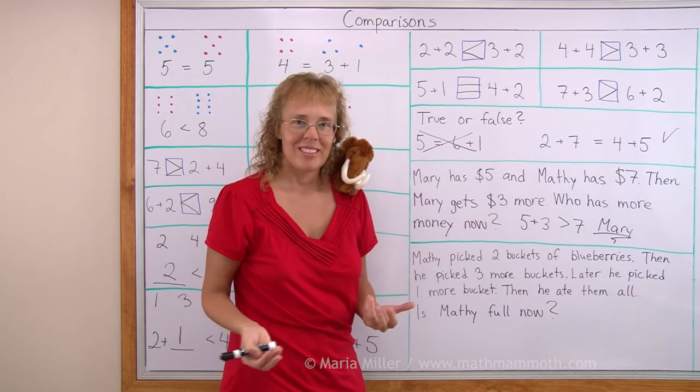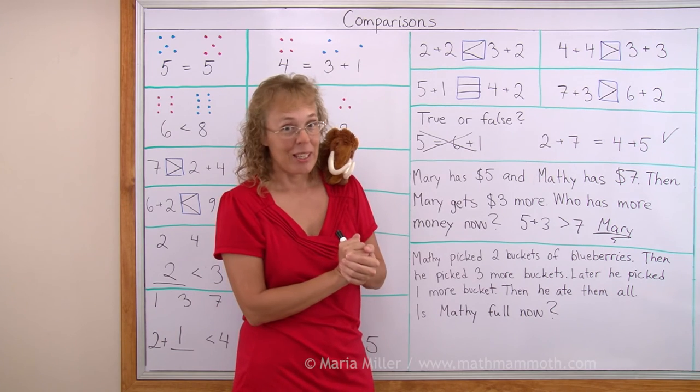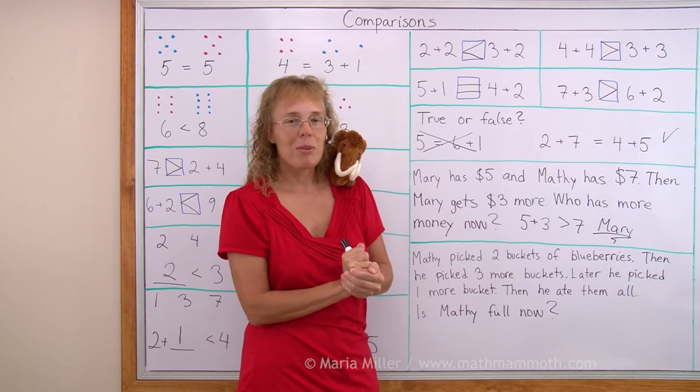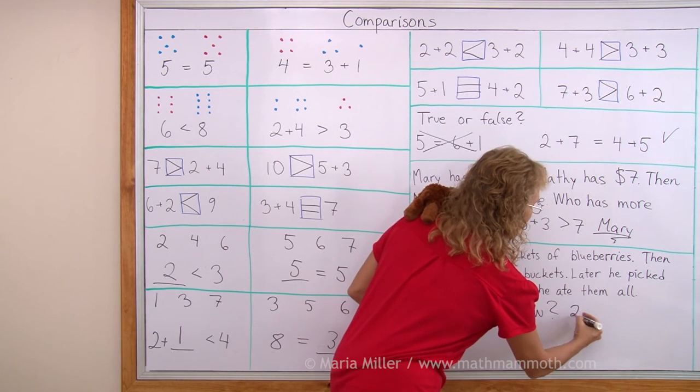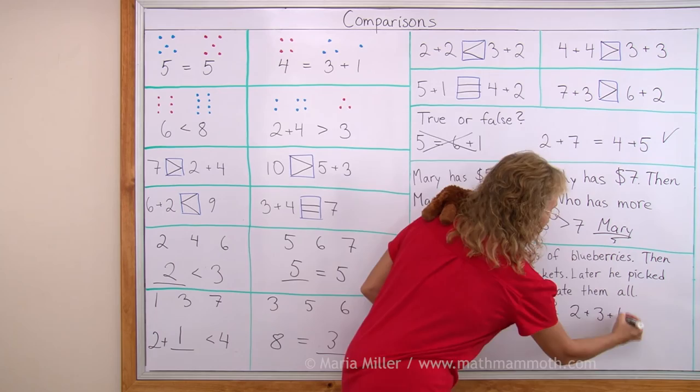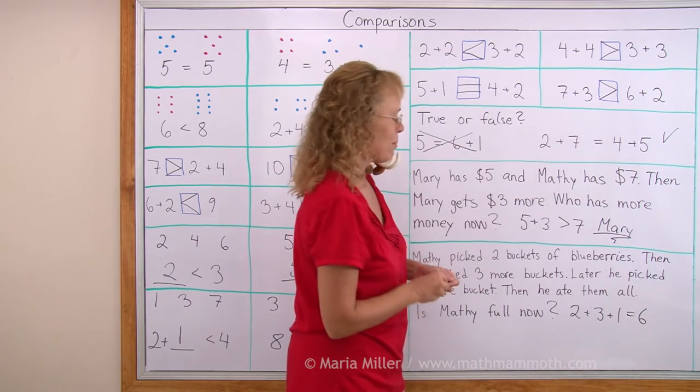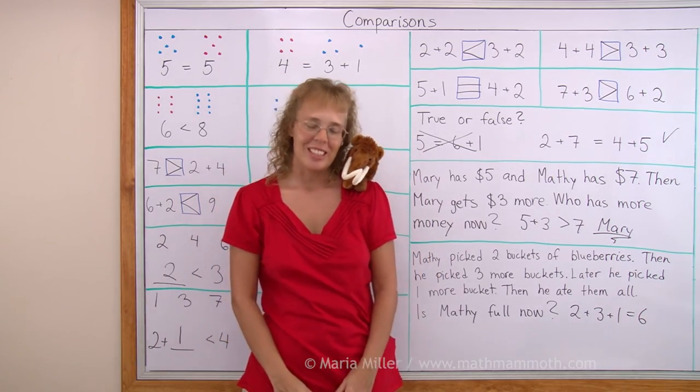Let's ask how many buckets Matthew picked. Or we can ask how many bucketfuls of blueberries did Matthew eat? The answer would be 2 plus 3 plus 1 and that makes 6. He ate 6 bucketfuls of blueberries and now he's full. Okay, we're all done with this lesson.